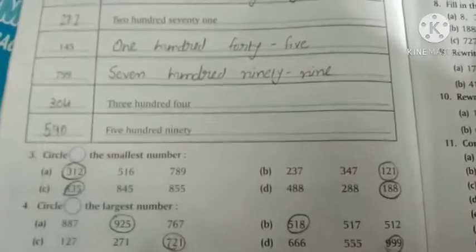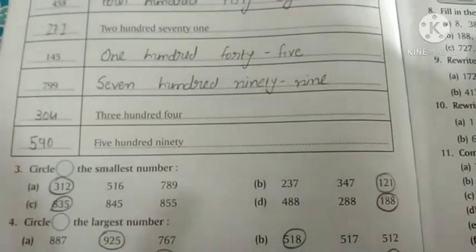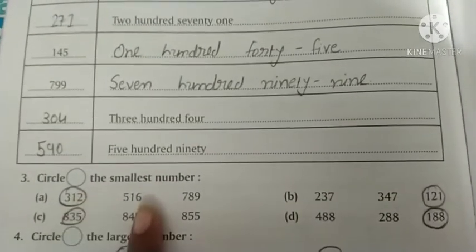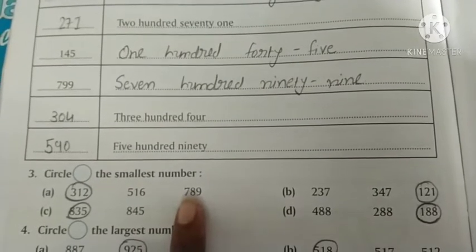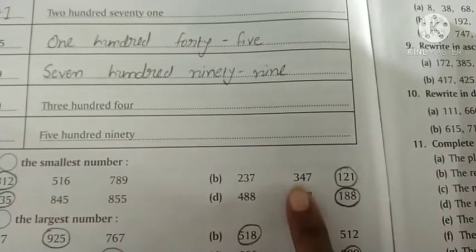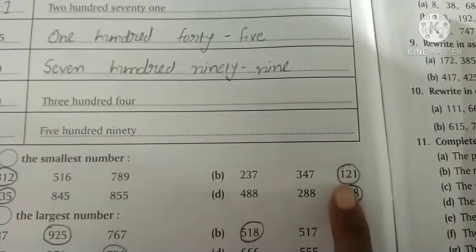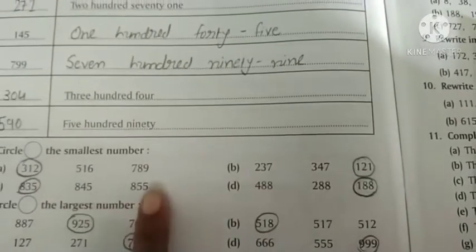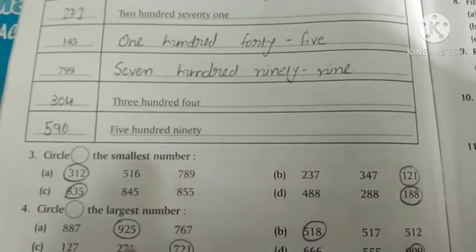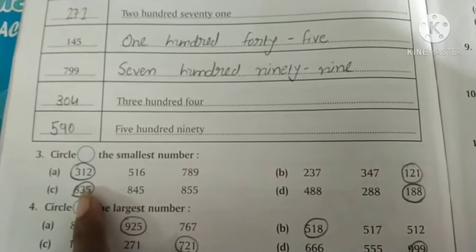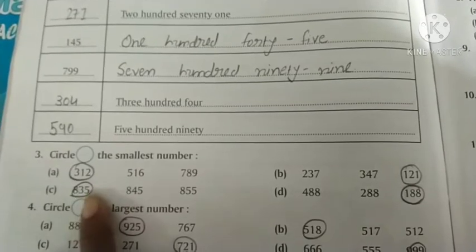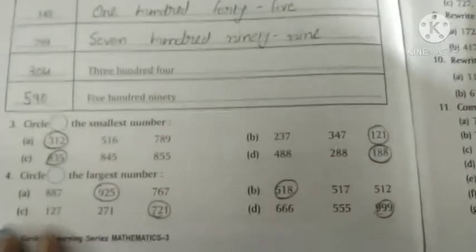Question 3, circle the smallest number. Remember to check the first digit of all numbers. Here first digit is 3, here is 5, and here is 7, so the smallest digit is 3. Next, we have 2, 3, and 1, so smallest is 1. For C, first digit is 8 in all, so check second digit: 3, 4, and 5. Obviously 3 is smallest, so 835 is the answer.